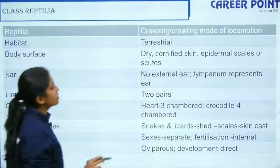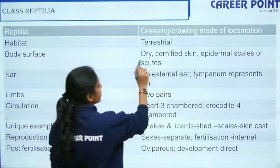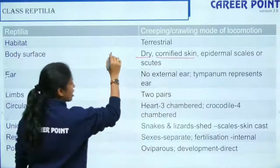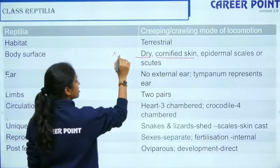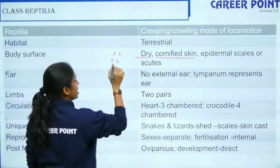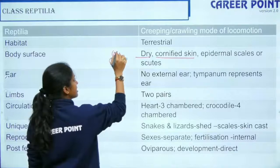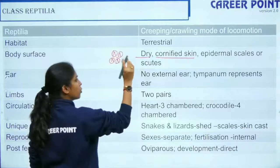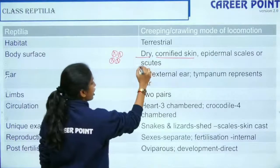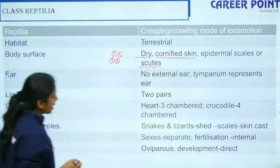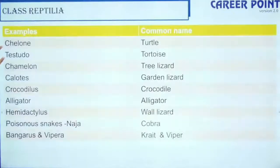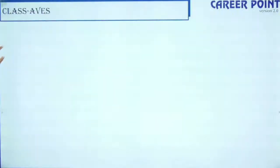The next class is Reptilia. In reptiles, the skin is dry and cornified. Like on a crocodile's skin, the thick dead keratin cells form structures called scutes. These are the key points to remember about reptiles.